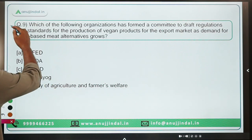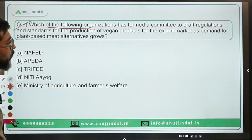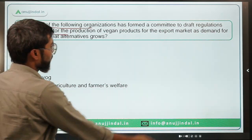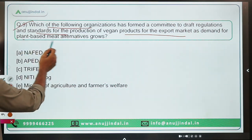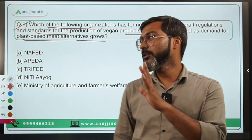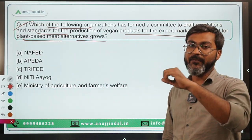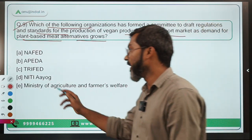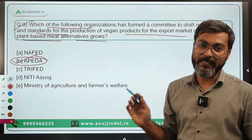Question 9: Which organization has formed a committee to draft regulations and standards for the production of vegan products for the export market, as demand for plant-based meat alternatives grows? The organization is APEDA — Agriculture and Processed Food Products Export Development Authority. The correct answer is APEDA.